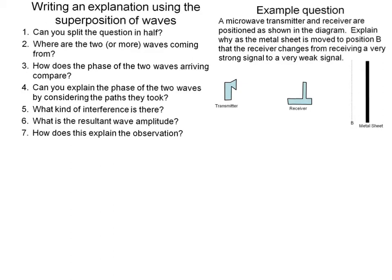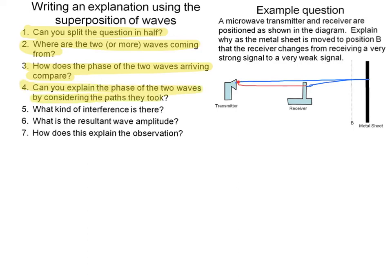Now let's put it all together to make a good explanation. When the metal sheet is in its original position, part of the wave given out by the transmitter will go directly to the receiver, and part will travel to the metal sheet and be reflected back to the receiver. These two parts of the wave will arrive in phase because the reflected part travels an extra distance equal to an integer number of wavelengths. Because the two parts arrive in phase, this produces constructive interference, making a large resultant wave, which means the receiver receives a very strong signal.